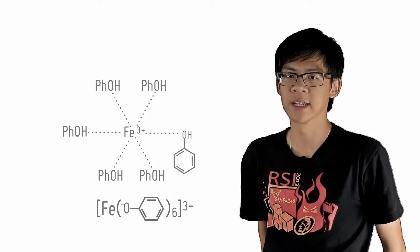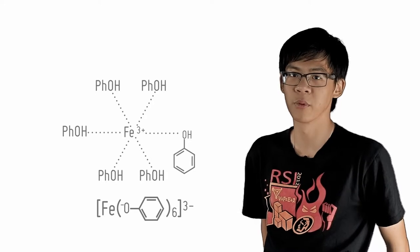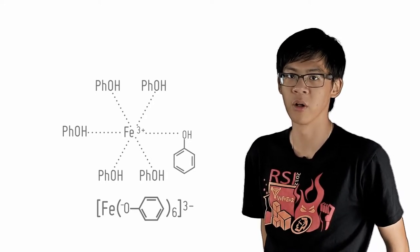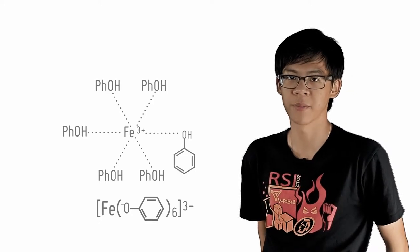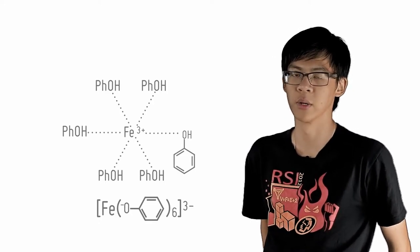Of course there are also other tests to test for phenols. Adding aqueous Br2 to phenol produces the observable white precipitate of 2,4,6 tribromophenol as we have covered in the previous checkpoint. Also we will observe that solid phenol itself will dissolve in aqueous NaOH.